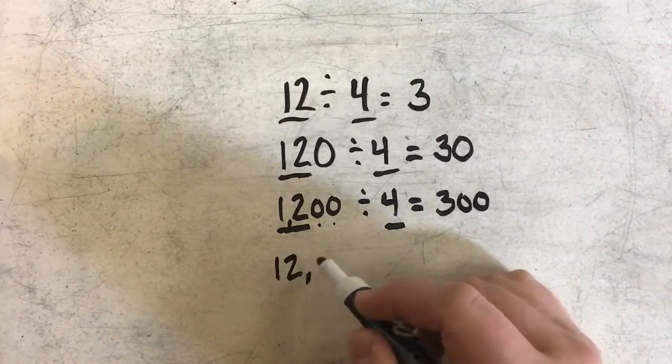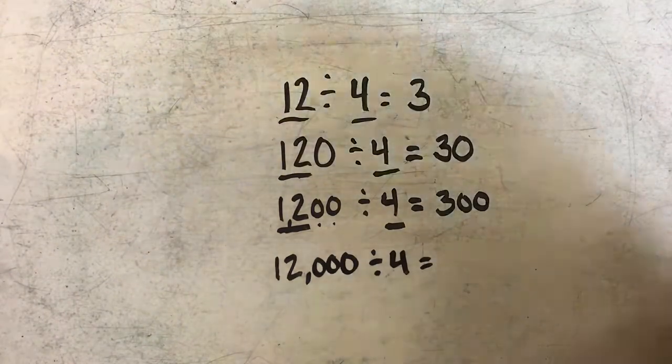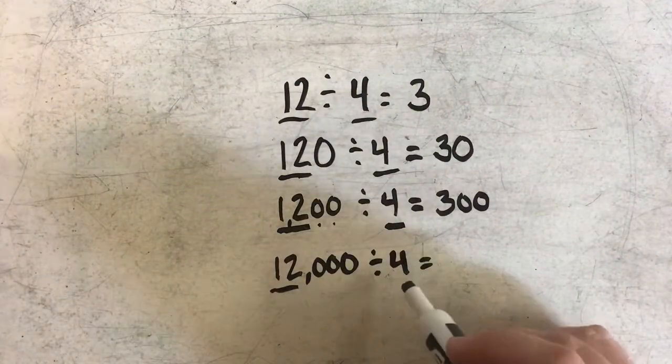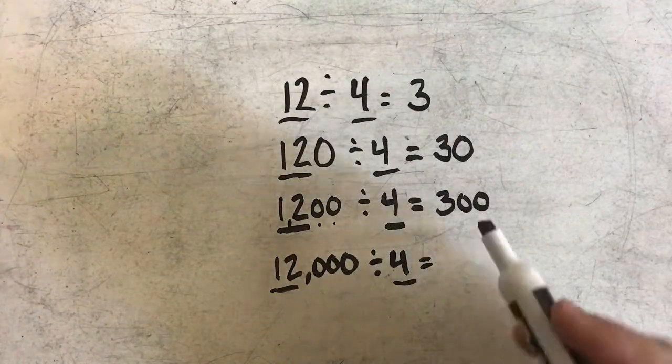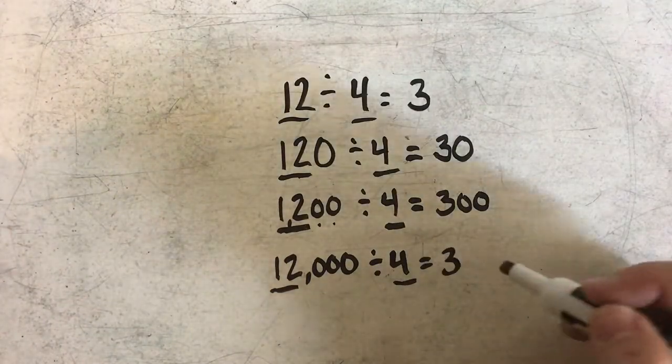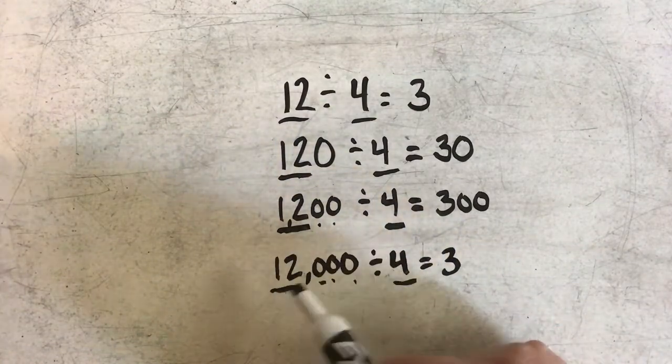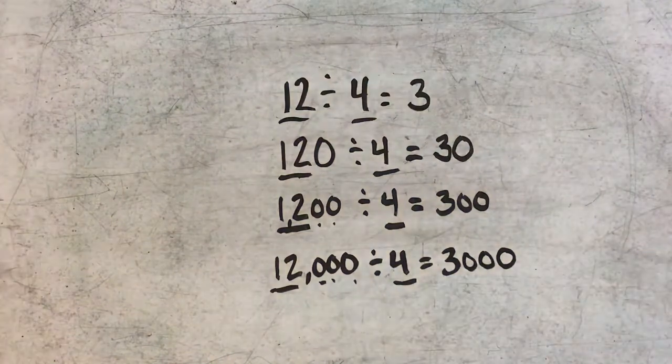Let's continue the pattern one step further: 12,000 divided by 4. Same process—I'm going to find my basic fact, which is 12 and 4. 12 divided by 4 is still 3. Now I have three zeros in my dividend, so I'm going to include three zeros in my quotient.